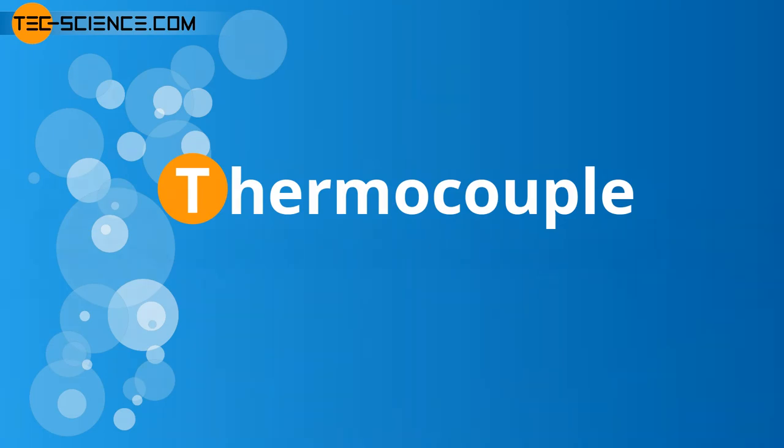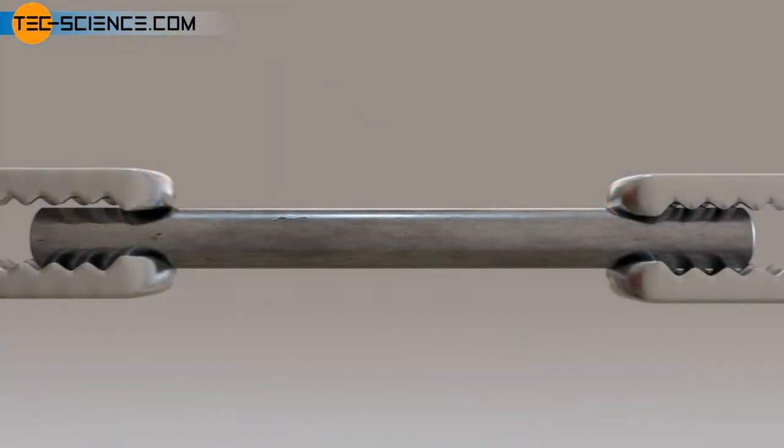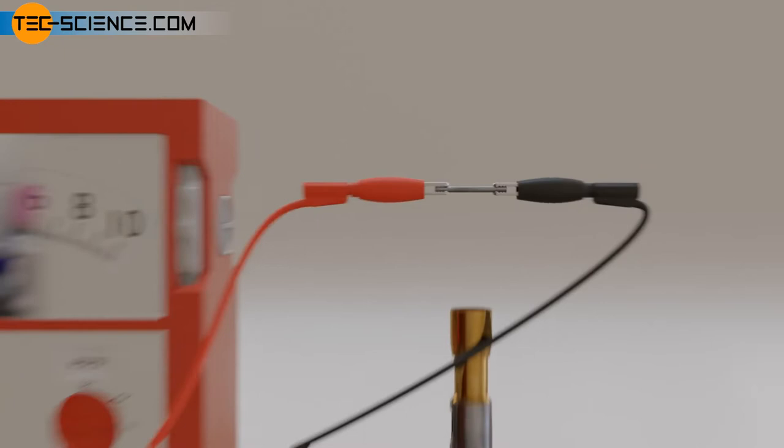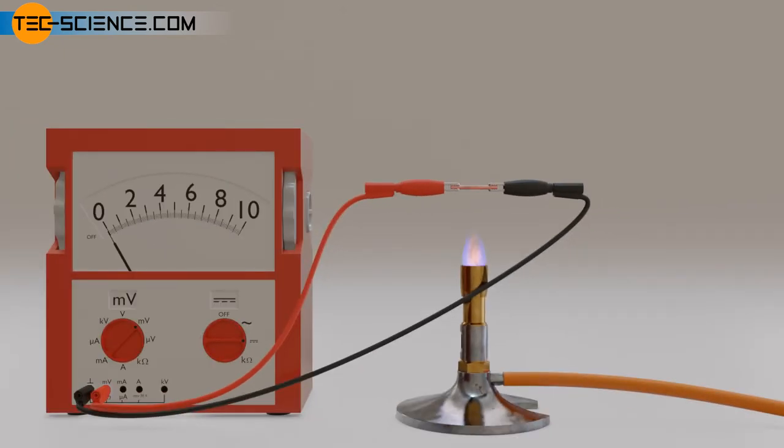Thermocouple. If a short piece of wire were exposed to a heat source, the wire would heat up evenly. Due to the lack of temperature gradient between the ends, no thermoelectric voltage would be measured.